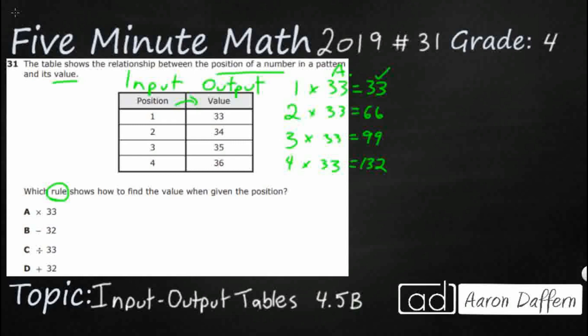It has to work for all four. So let's check option B. We have inputs 1, 2, 3, 4. What does B want us to do? Minus 32. So 1 minus 32, 2 minus 32 — you see how this is going to be a little bit strange. Notice how I'm starting with the input, because we start with the input, we use the rule, we get to the output.